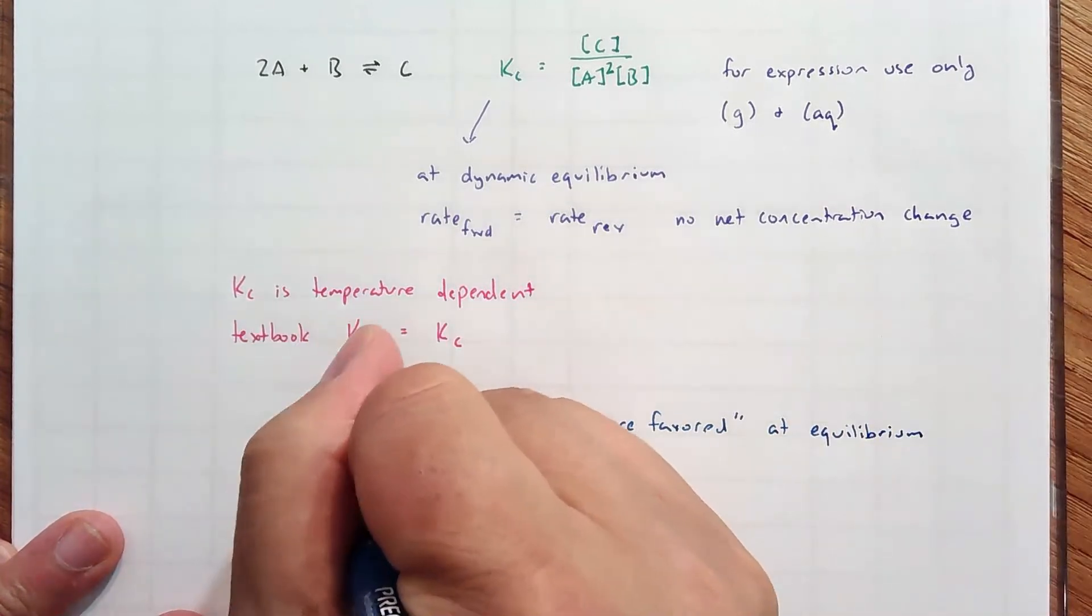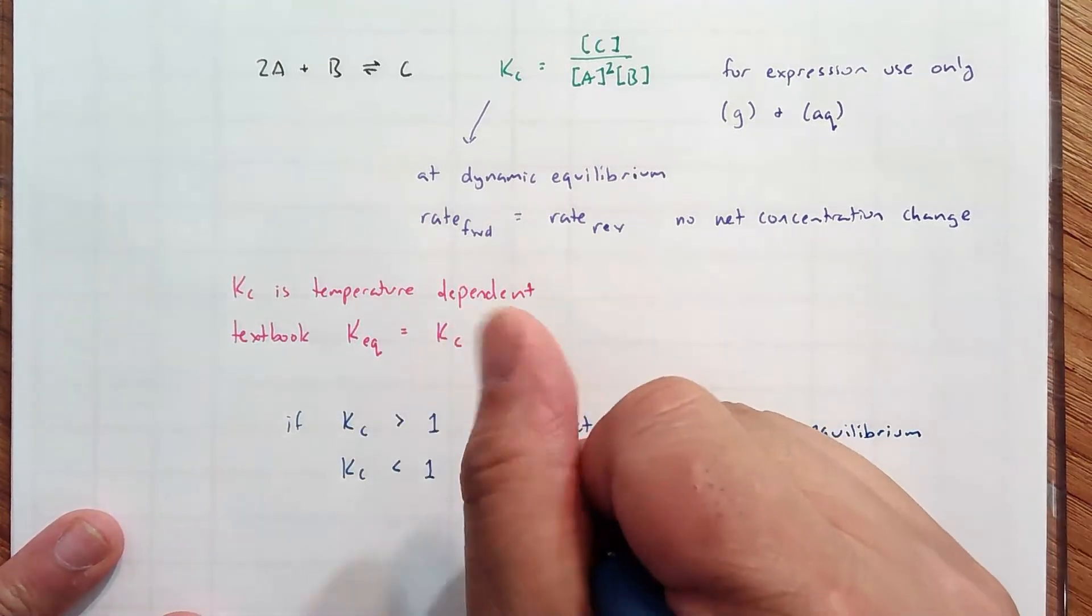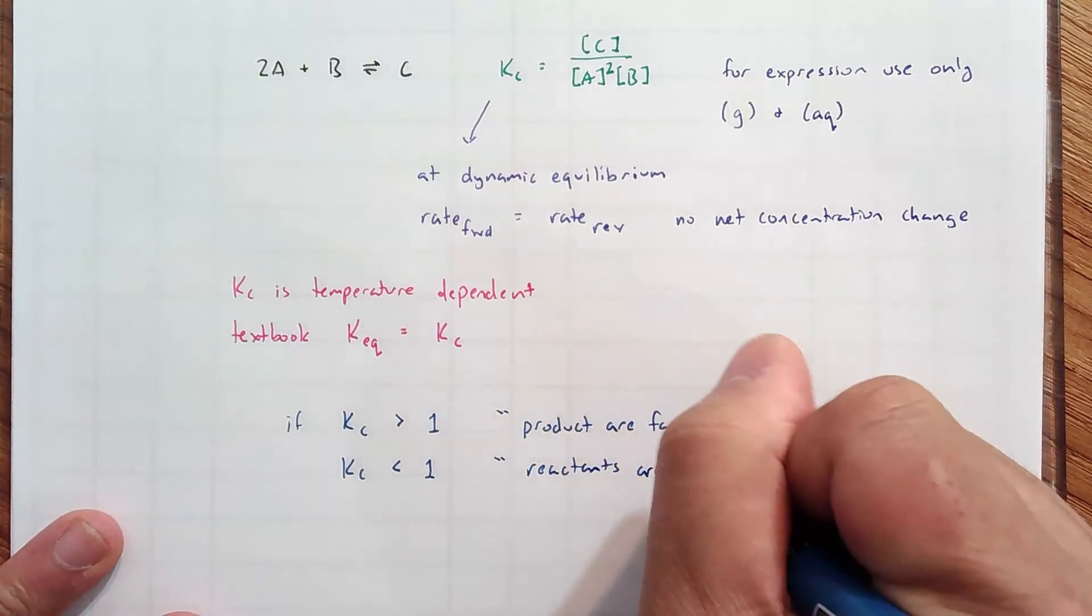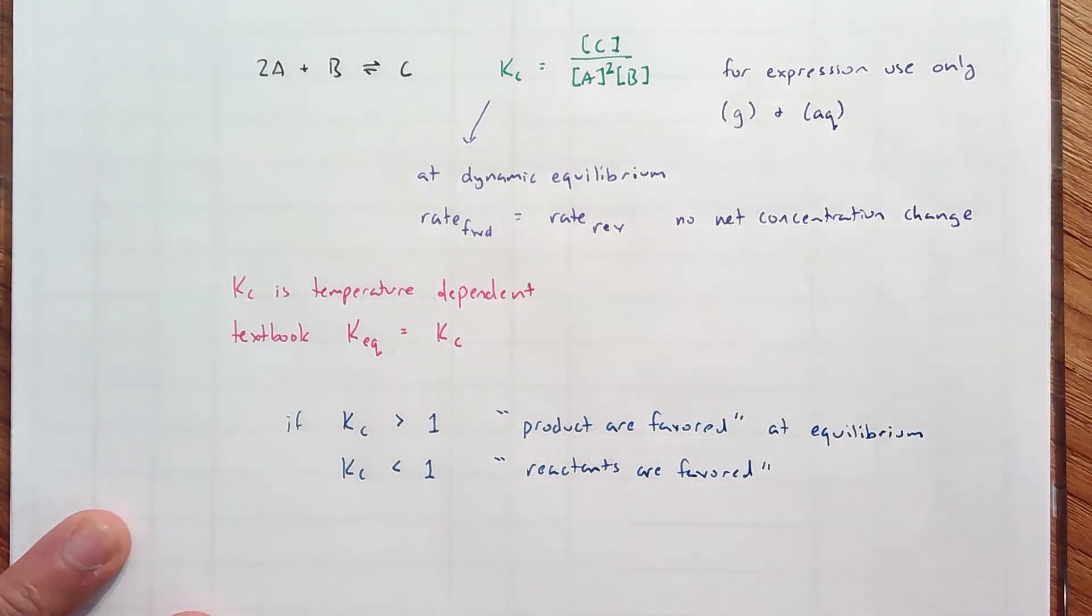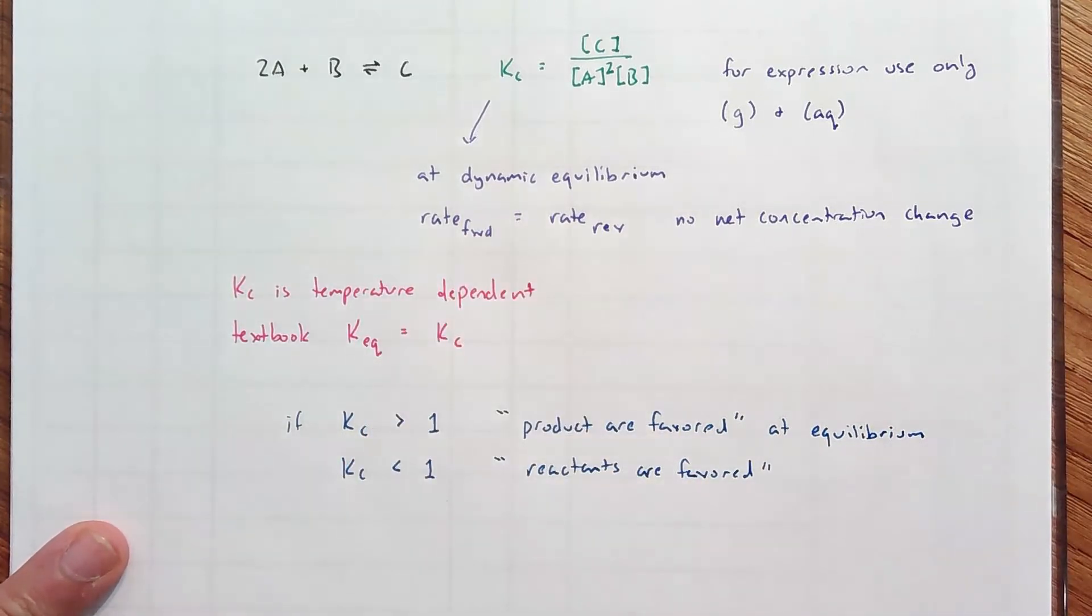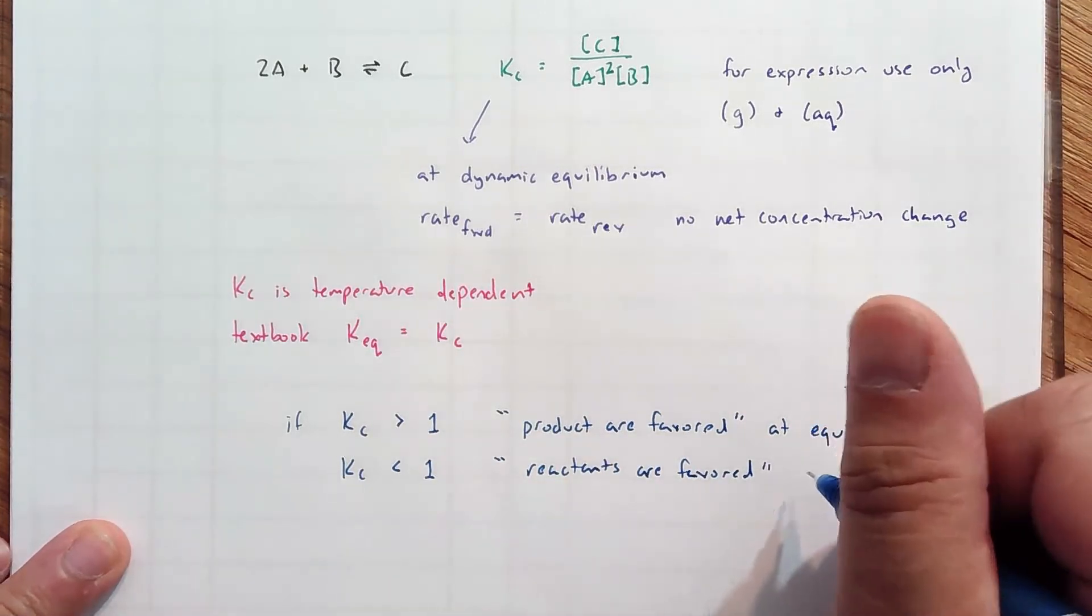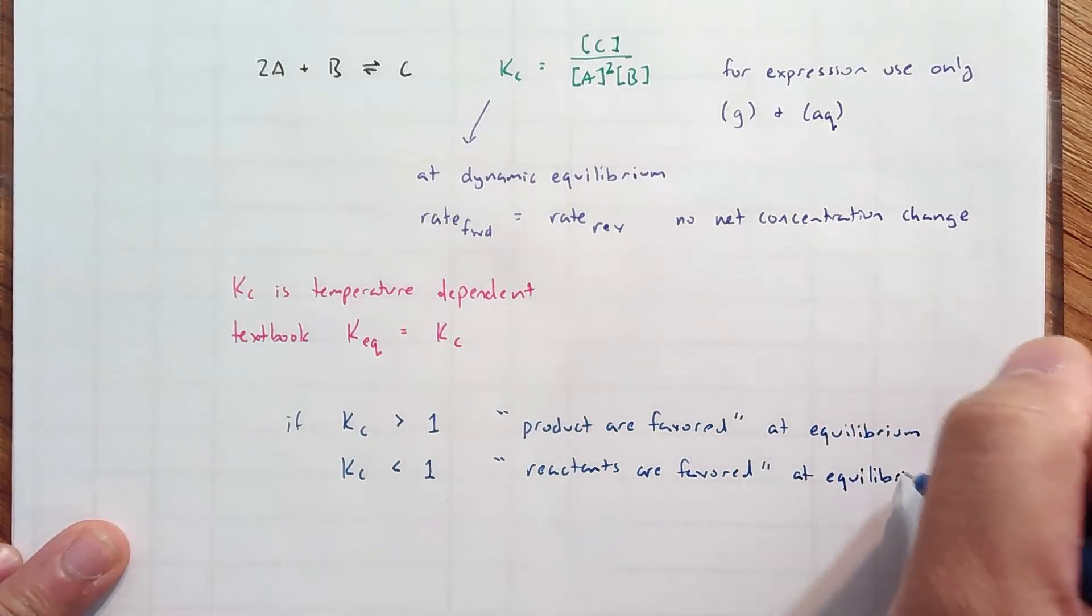Now, if you have the opposite, Kc is less than 1, then reactants are favored. Is it telling you that the rate of the reverse is larger than the rate of the forward? Not at all. Because at equilibrium, this is always true. What this is telling you is that the denominator is bigger. The reactants concentrations, in general, are higher at equilibrium.